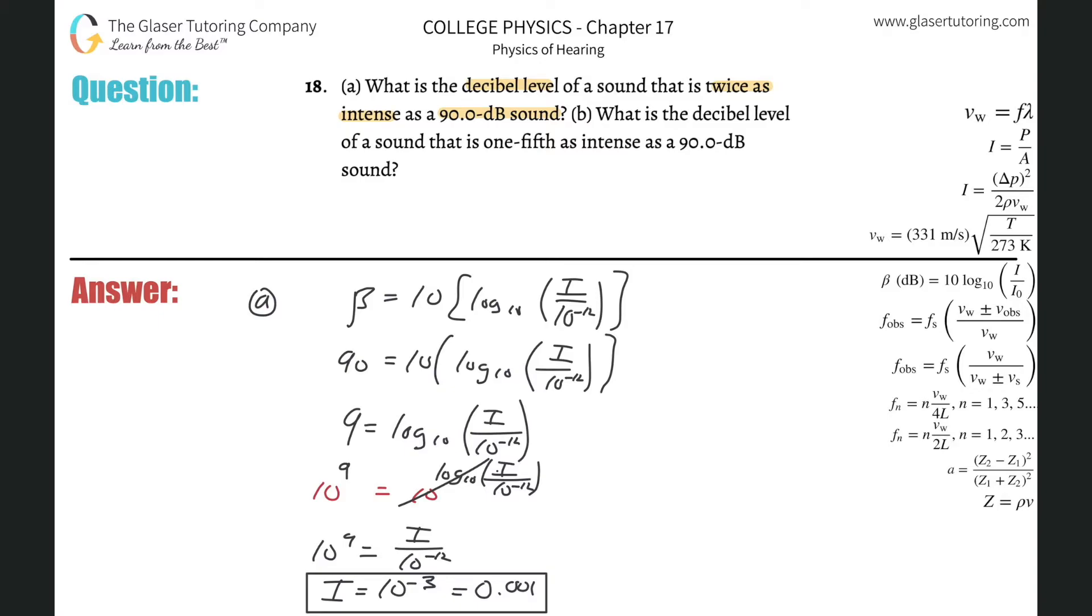Now what's going to happen? Well, we want to find the decibels now when it's twice the intensity. So what do you got to do to this value? Multiply it by 2. So what's the intensity when it's twice the original?